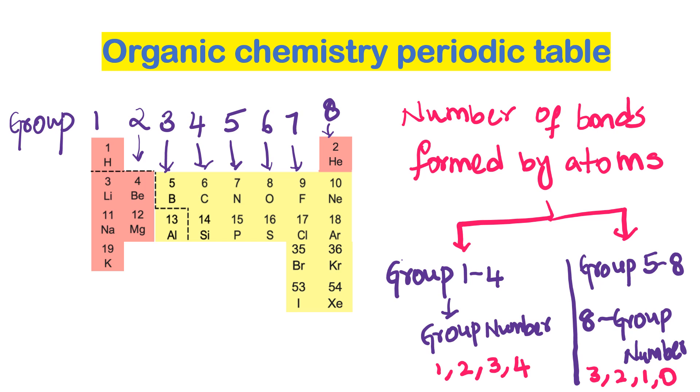For example, let's consider nitrogen. The group number of nitrogen is 5, and to see the number of bonds formed by nitrogen, we should subtract 8 minus 5 and we get number 3. That is the number of bonds formed by nitrogen.